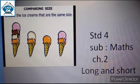Now, I am going to start your new chapter, chapter number 2, long and short. See students, there are 4 ice cream cones. Can you tell me which ice cream cone is longer and which ice cream cone is shorter? See, the number 1 ice cream cone is longer and number 3 ice cream cone is shorter in height.